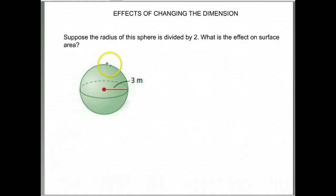We've talked about changing dimensions. We're going to do the same thing with a sphere, about what happens when you change dimensions. So suppose the radius of a sphere is divided by 2. What is the effect on the surface area?